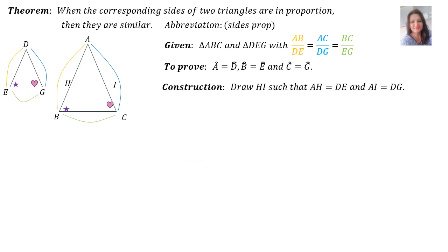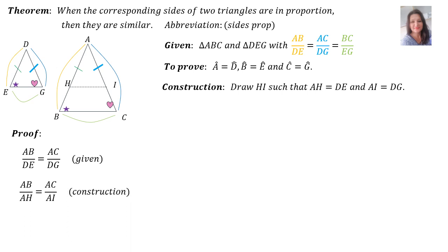We have a construction: draw HI such that AH equals DE and AI equals DG. Here's the proof. Do you agree AB over DE is equal to AC over DG? That was given. We can now replace DE with AH and DG with AI, because that was the construction. Therefore, HI will be parallel to BC, because it divides the sides proportionally.